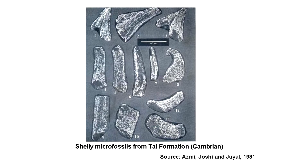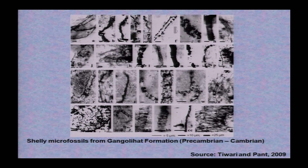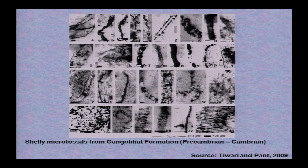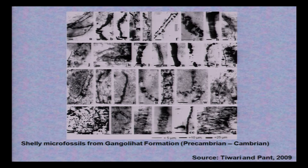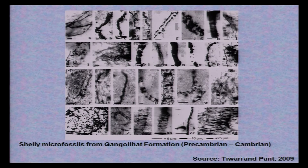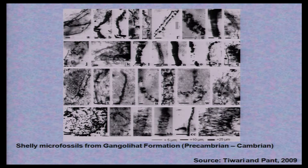They are basically conodonts, but now the age is settled — they are Cambrian fossils. This is another view of those micro fossils which have been shown. The Gongoliot formation contains magnesite; basically they are limestones with micro fossils, and the age is settled as Cambrian fossils.